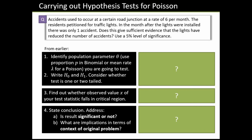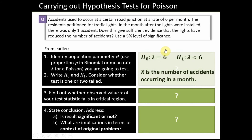The first thing we have to do is state our null hypothesis and alternative hypothesis. Our null hypothesis assumes that nothing has changed, so the rate is still 6 per month: λ = 6. We're testing to see whether it has reduced, so whether λ is less than 6. In this example, x is the number of accidents occurring in a month.